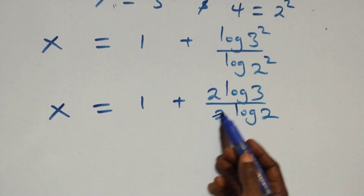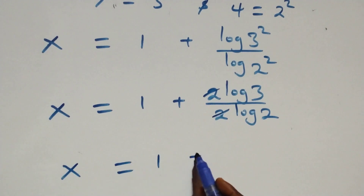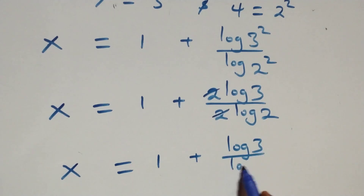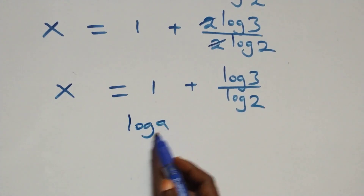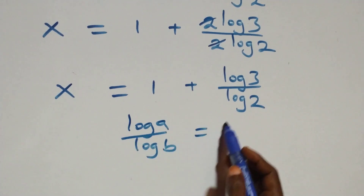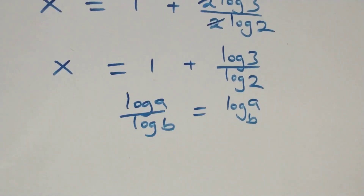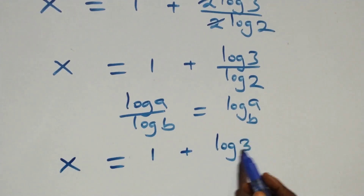The 2s cancel each other, so we have x = 1 + log3/log2. We then apply the change of base rule: log(A)/log(B) = log_B(A). Therefore, x = 1 + log₂3.